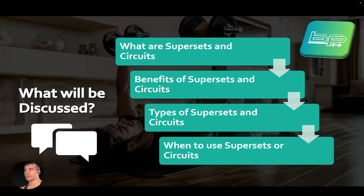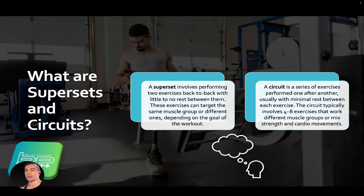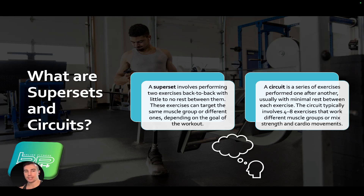We're going to go over the two aspects of these topics. Supersets involve performing two exercises back-to-back with little to no rest between them. These exercises can target the same muscle group or different ones, depending on the goal. A circuit is a series of exercises performed one after another, usually with minimal rest between each exercise.